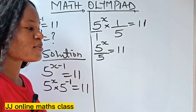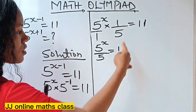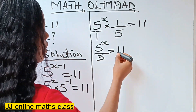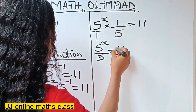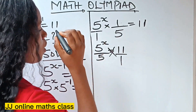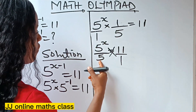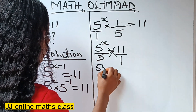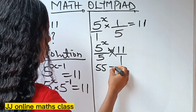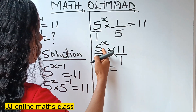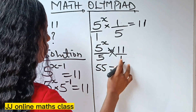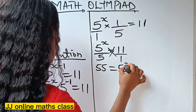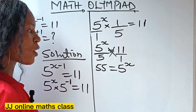At this point, what we need to do is cross multiplication. When we cross multiply, 5 times 11 gives us 55, which is equal to 5 to the power of x.